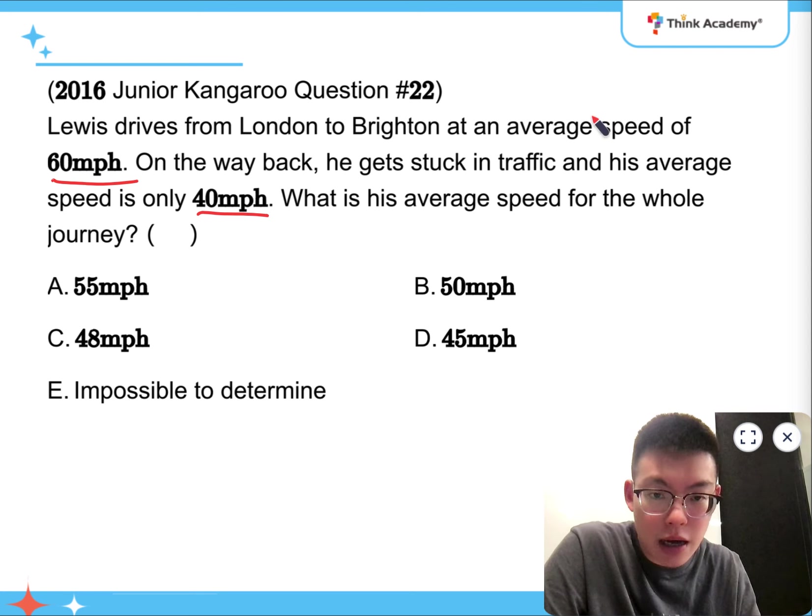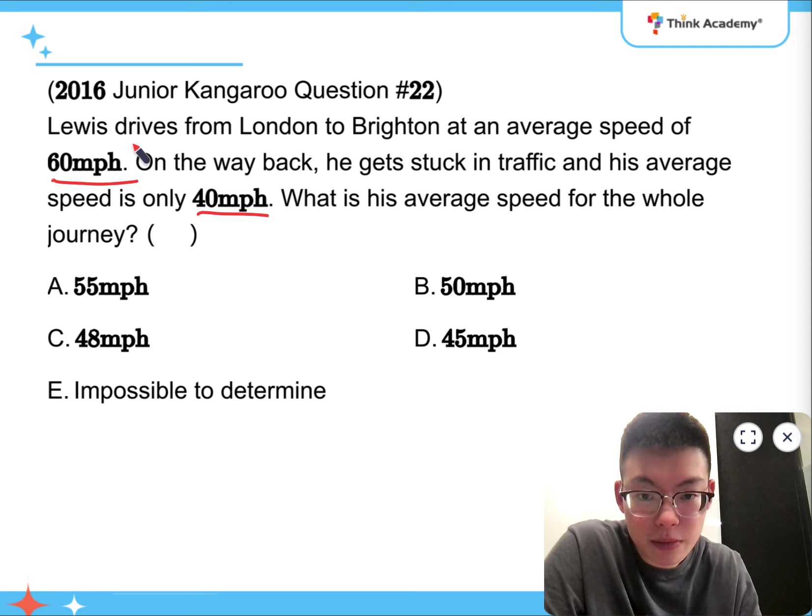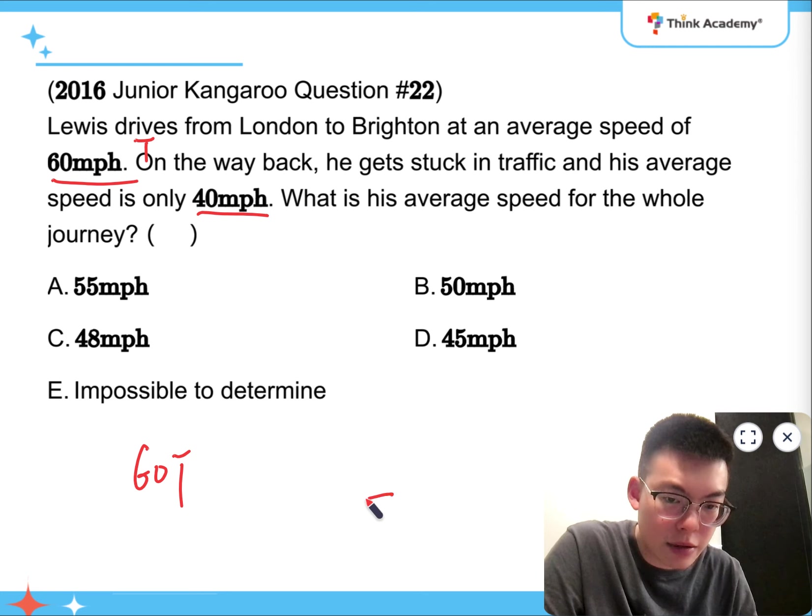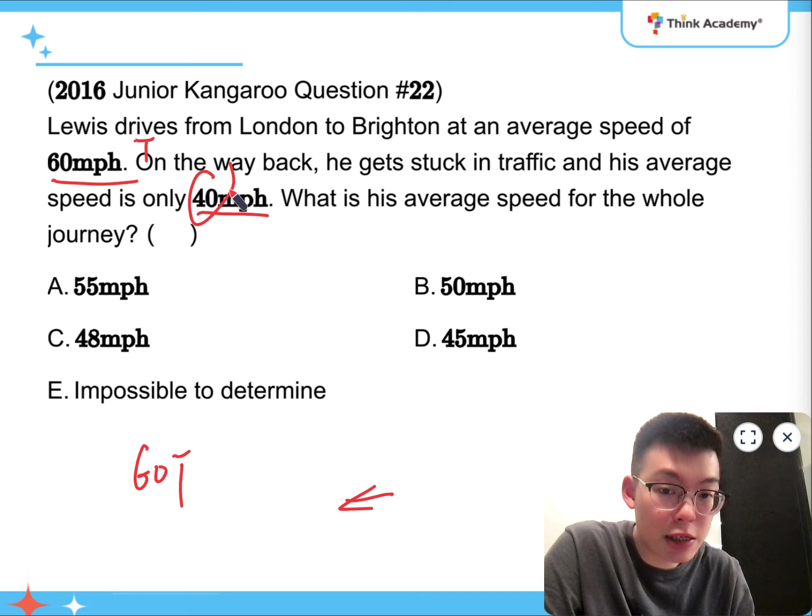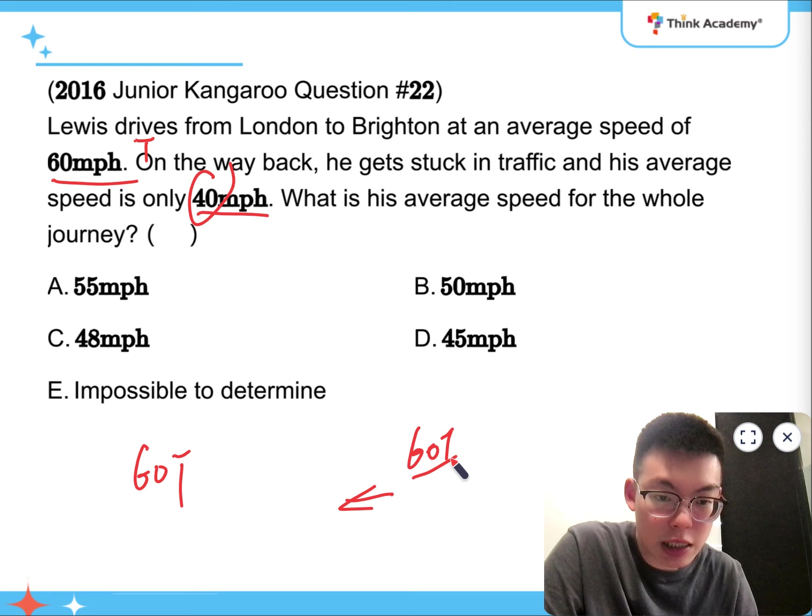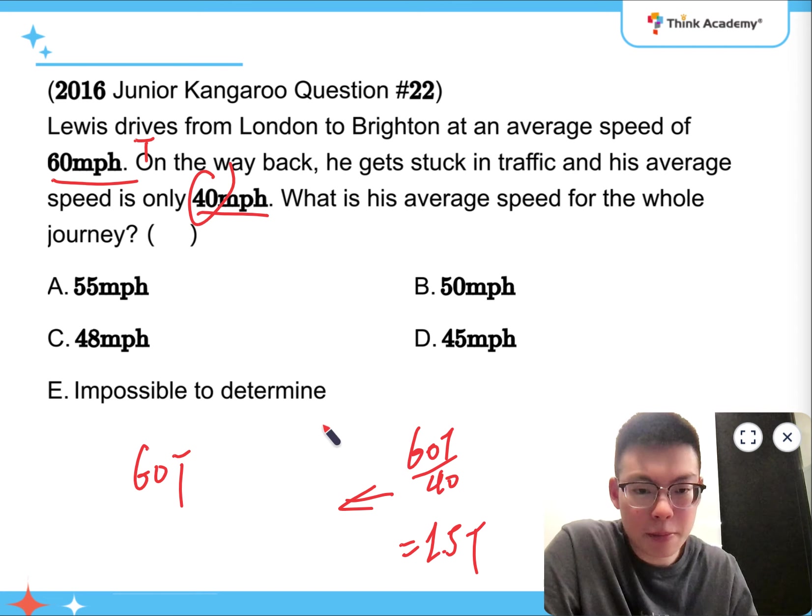So let's say he's taking a time of T on his way. So it means that the distance is going to be 60T. And on his way back, because his speed is 40 miles per hour, so his time will be 60T divided by 40, which is 1.5T. But of course, if it is a decimal, it would be nastier when we are calculating it. But that's the idea. So we need to find the time, like the relative time, between the two journeys first.